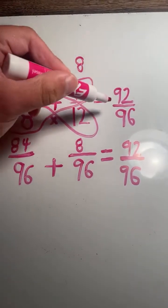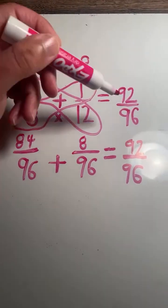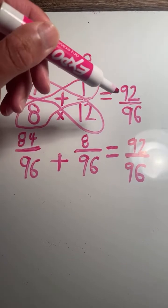Now, 92 over 96 is not in lowest terms. That can be reduced. So I'm not going to say that's the final answer, but that'll be the final answer for this video.